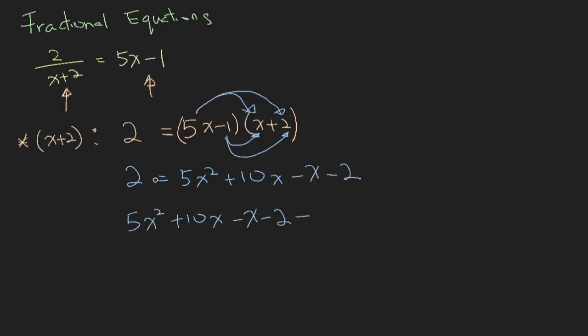Minus 2 from this side you will get zero. Let's simplify this term and you will have 5x squared. Now 10x and minus x can be combined to give you 9x. Minus 2 and minus 2 will give you minus 4.